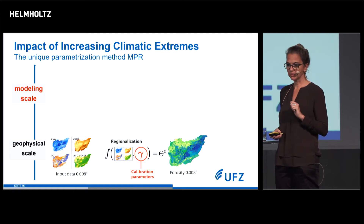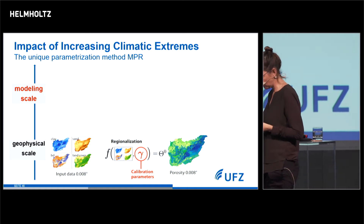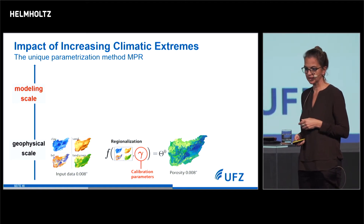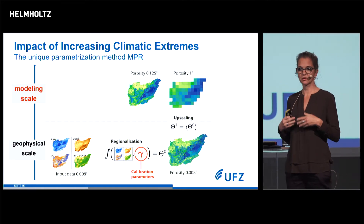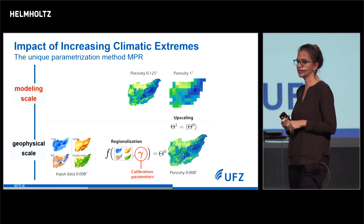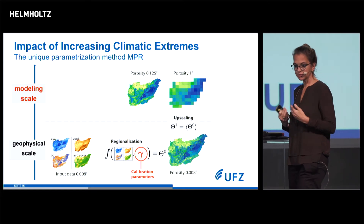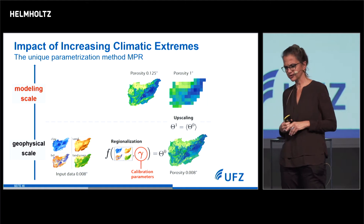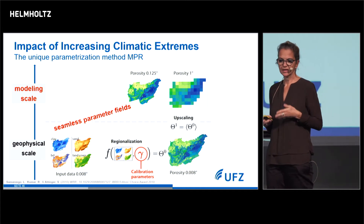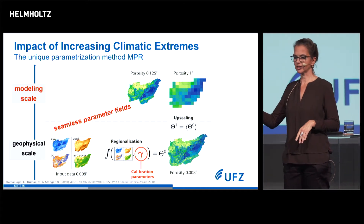This is the first step. We have the parameters on a very fine scale — usually 10, 20, or 50 meters. This is not the scale where we run the model, because it's computationally too expensive. So we also have to translate the model to a kilometer grid scale. Here, theoretical physics brings in the beauty of scaling operators, and we can translate the parameters to coarser scales. It preserves physics and all the spatial patterns in parameter porosity, giving us seamless parameter fields working across different scales.